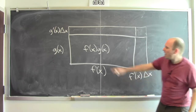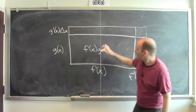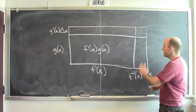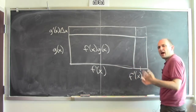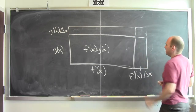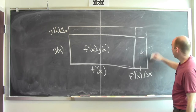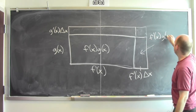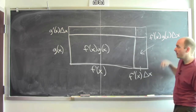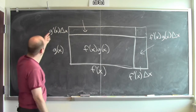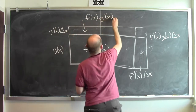To figure out how much f of x times g of x changes when I change x: the area of the side piece on the right has width f prime of x times delta x and height g of x, so its area is f prime of x times g of x times delta x. The top piece has height g prime of x times delta x and width f of x, so its area is f of x times g prime of x times delta x.